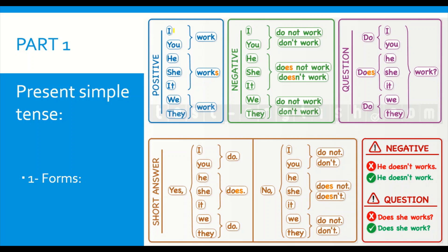We start off with the first form, which is the positive. Here we have subject plus verb. The subjects can be I, you, he, she, we, or they, and the verb can be any verb. When we use I, you, we, they, the verb doesn't change. There is no change in terms of the format of the verb, no additions at the end — it keeps its base form.